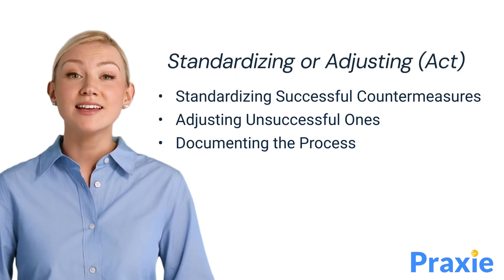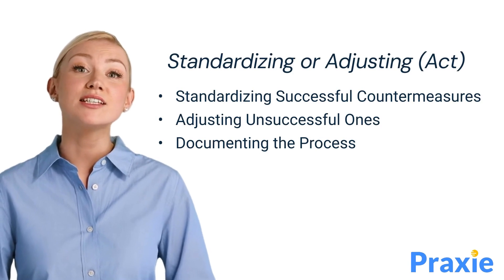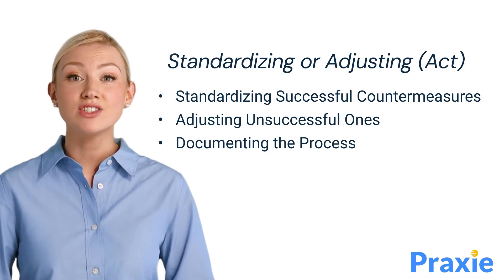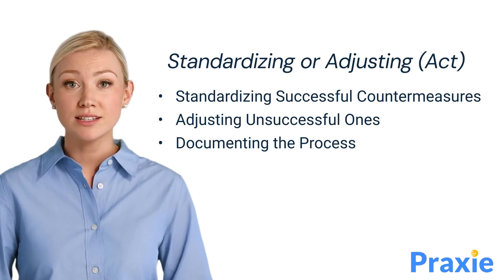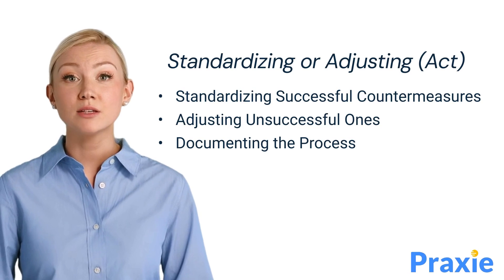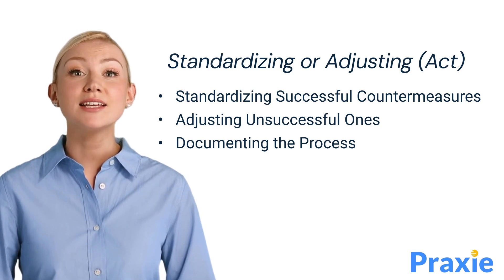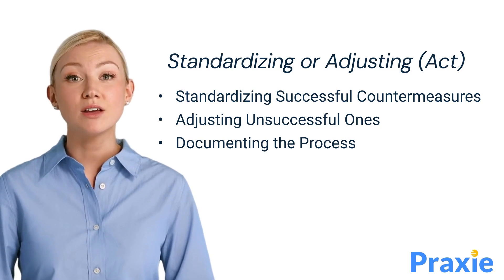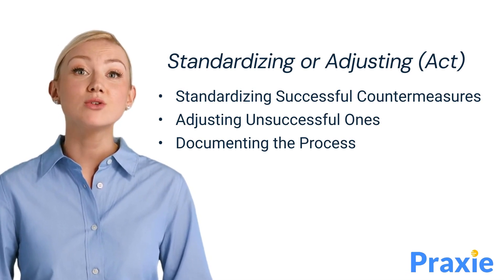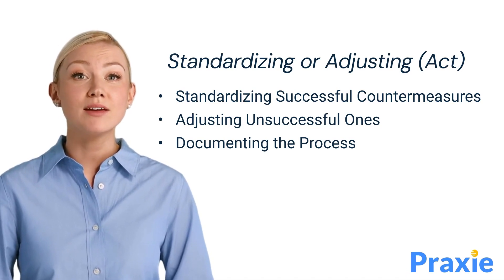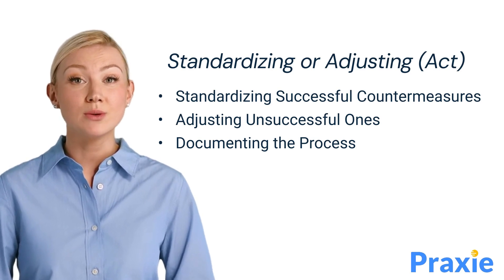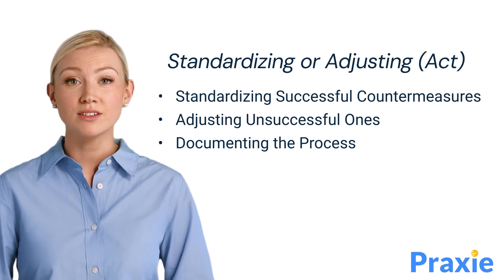In the ACT phase, if the countermeasures have proven successful, they should be standardized across the process. If not, adjustments need to be made, and the PDCA cycle may be repeated. It's also important to document the entire process for future reference and continuous improvement.